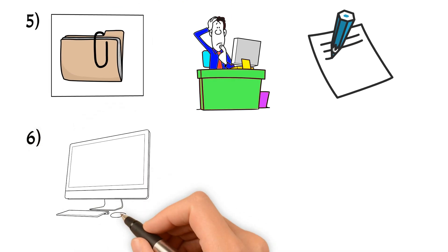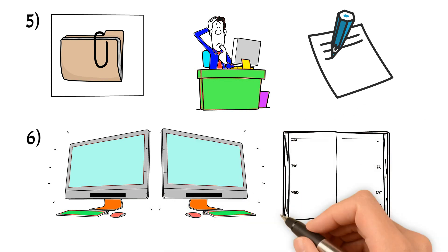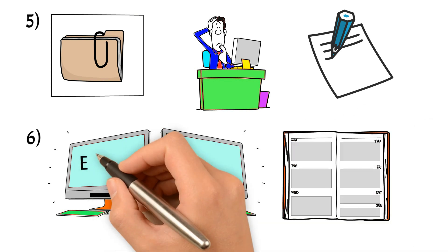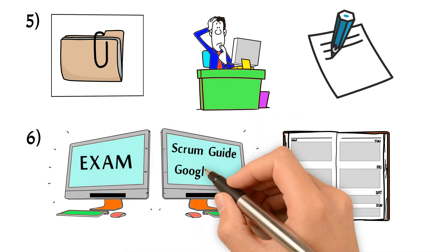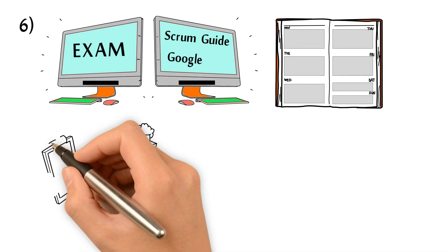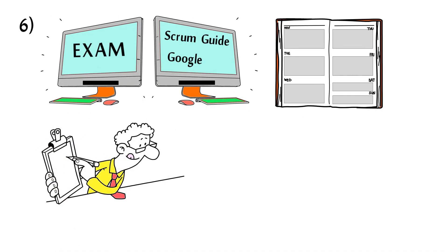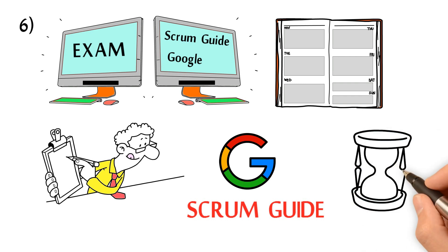Six, dual screen monitors may help since it is an open book exam. One screen is for your exam screen. The other screen can be used for your Scrum Guide or Google. You may pick up a few good answers for your exam. However, do not rely heavily on Google or Scrum Guide during the exam. Otherwise, you will not have enough time to complete your exam.